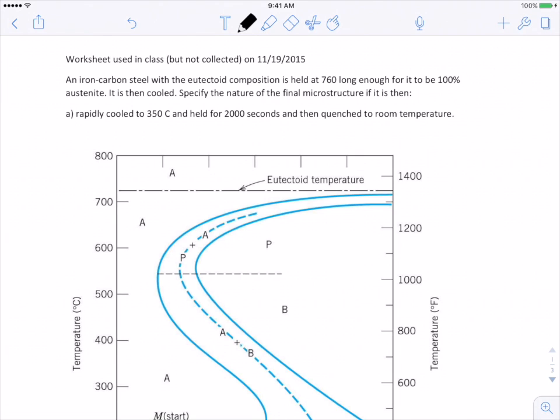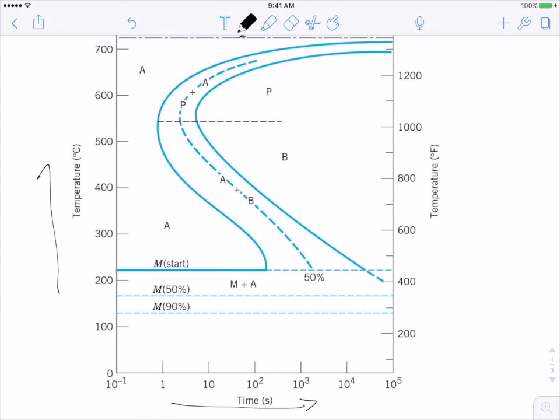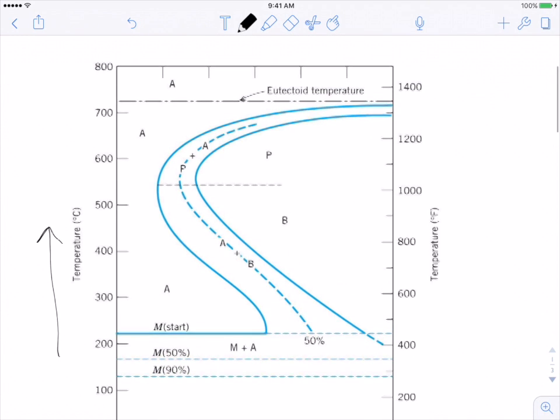We're going to be going through work so you can get more familiar with using these particular diagrams to answer questions. We call them TTT diagrams, which stands for time, which is on the vertical axis, and the third T stands for transformation, because these curves are actually showing us the degree to which a phase transformation has taken place.